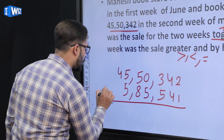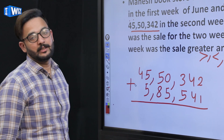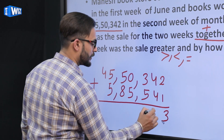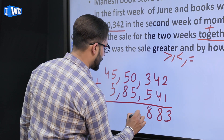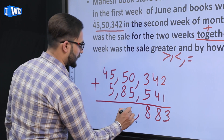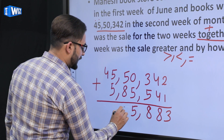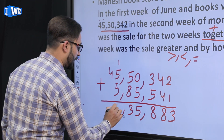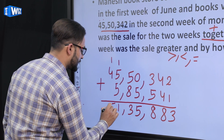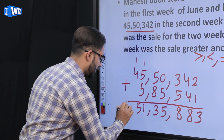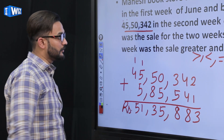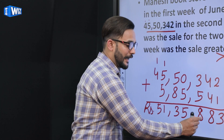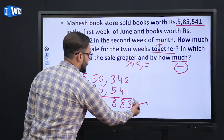Now add consecutively: 2+1=3, 4+4=8, 3+5=8, 0+5=5, then 5+8=13 so write 3 and carry 1, 5+5=10 plus carry 1 is 11 so write 1 carry 1, and 4+5 plus carry 1 is 10 giving 5. So the total combined sale for the two weeks is rupees 51,35,883.